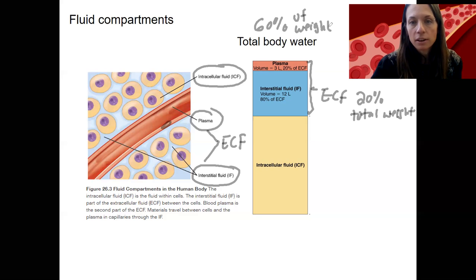Intracellular fluid, although it does vary slightly in different cells, is about 40%. You could have done that math - 60% minus 20% is 40%. So there's a lot of water inside your cells.